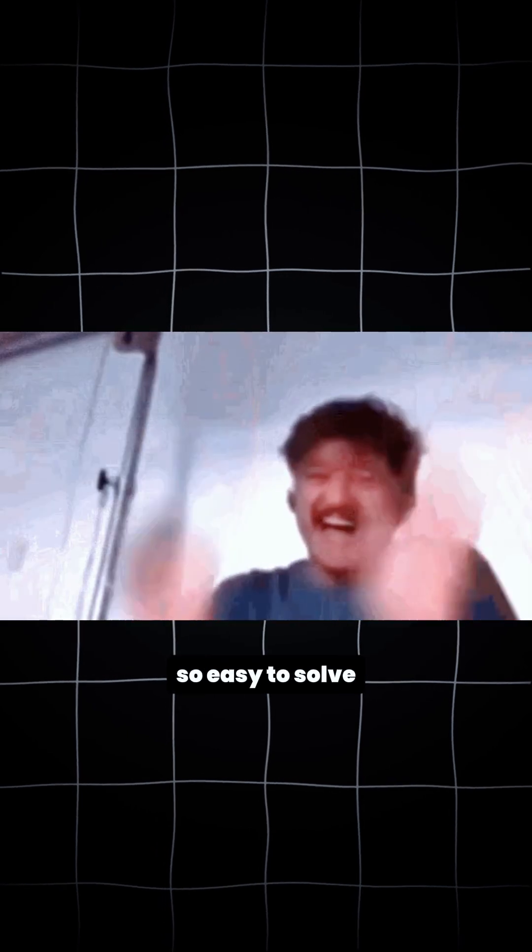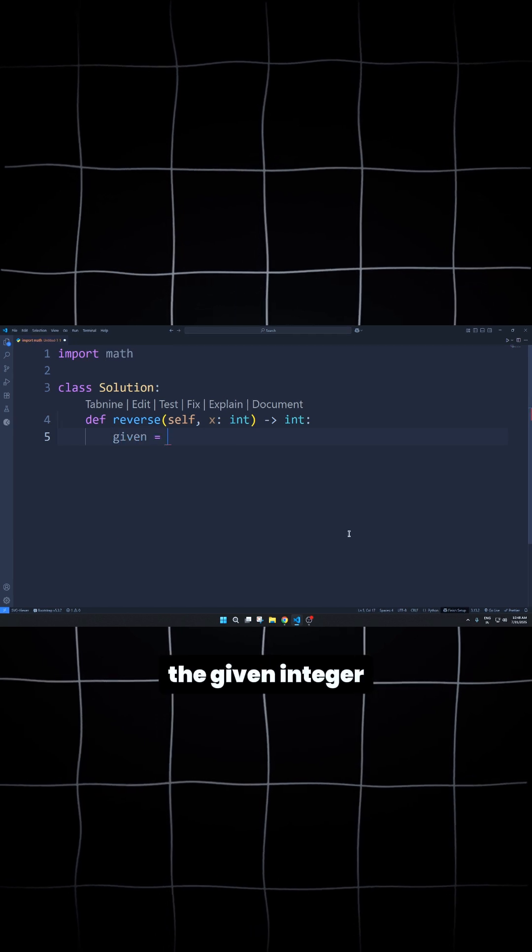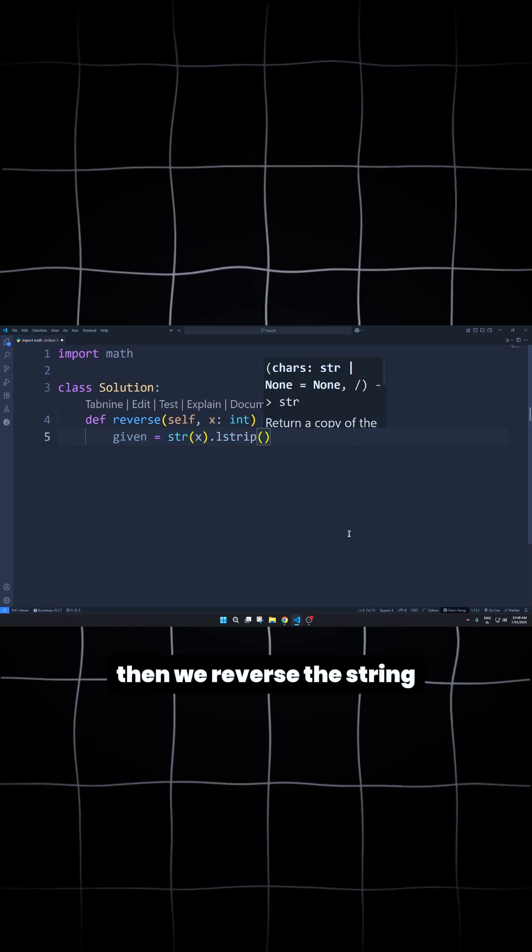Anyways, this sounds so easy to solve, but solving it with best optimization is the real catch. Here we start writing our code. First by converting the given integer to string and removing its sign, then we reverse the string.